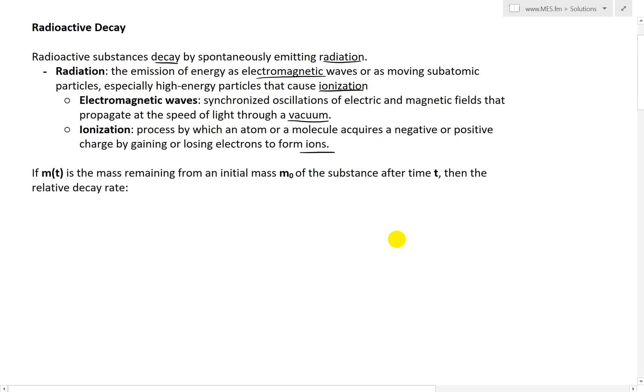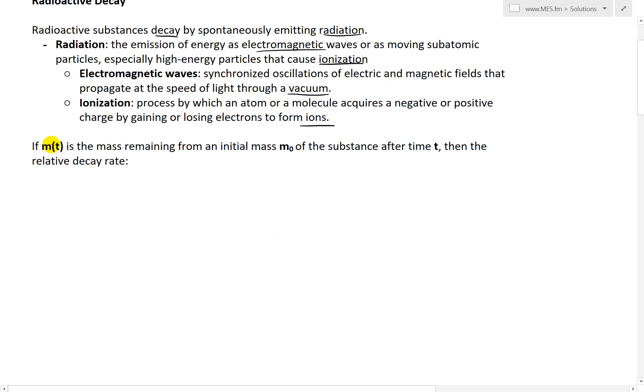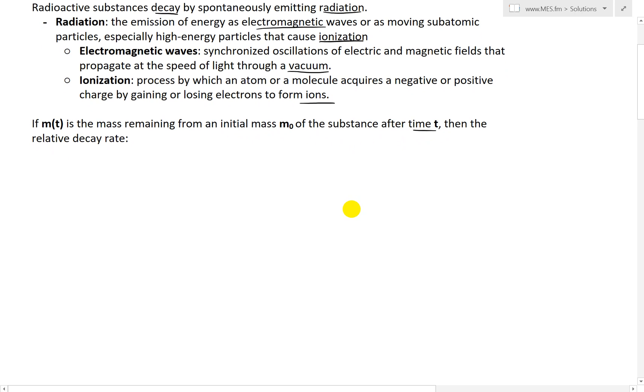Going further, if m(t) is the mass remaining from an initial mass m₀ of the substance after time t, then the relative decay rate, which I'm going to write down as (1/m)(dm/dt), has been shown to be constant.